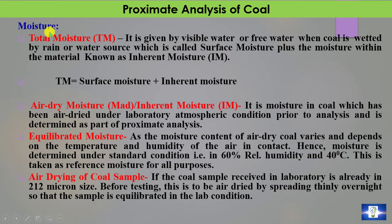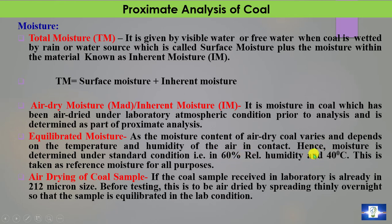Moisture in coal is of two types: surface moisture and inherent moisture. Surface moisture is visible or free water when coal is wetted by rain or a water source. Inherent moisture is the moisture in the coal which cannot be separated by air-dried condition alone. Since moisture content of air-dry coal varies with temperature and humidity, a standard condition is required: 60% relative humidity and 40°C, taken as reference moisture for all purposes.